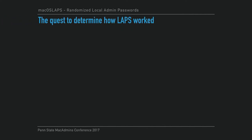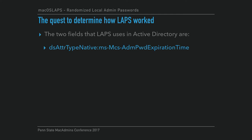It was a bit of a quest to determine how this worked, with some help from a lot of Mac admins. There are two fields that Active Directory uses for LAPS. Those two fields are the DS attribute type native MS-MCS-AdminPassword-Expiration-Time, which stores the expiration time, and then the field which actually stores the password. These are attached to the computer object in Active Directory on every machine.